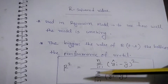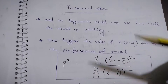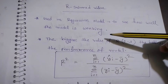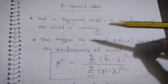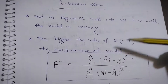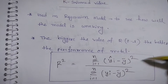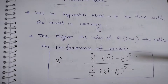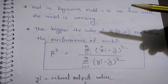R-squared is used in regression models to see how well the model is working and how well it is performing with the given datasets. You train the model on training data, predict on test data, and compare the predicted result with the actual result. The bigger the value of R-squared — which ranges from 0 to 1 — the better the performance. A value of 1 means 100% accurate, 0 means not accurate at all, and 0.5 means 50% accurate.